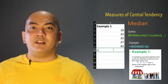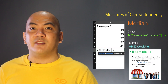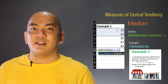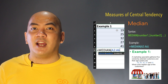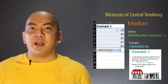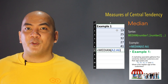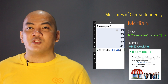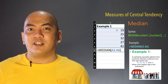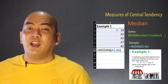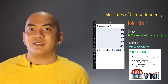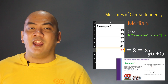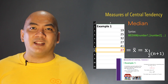For the median, Microsoft Excel has the MEDIAN function. Just type the equal sign, then MEDIAN, then in parenthesis the cell reference of the first up to the last observation separated by a colon. You may or may not put the closing parenthesis, then press the Enter key and you will have the median.